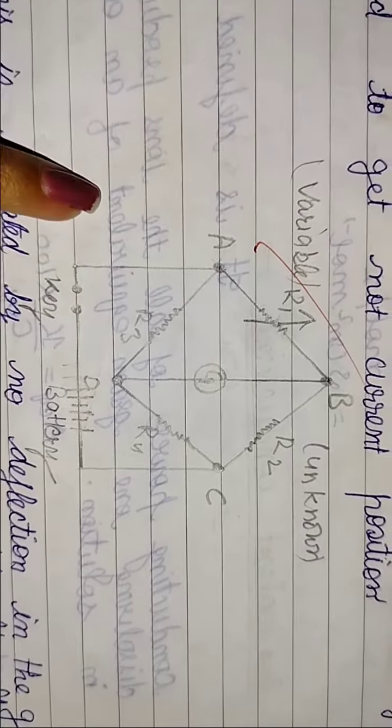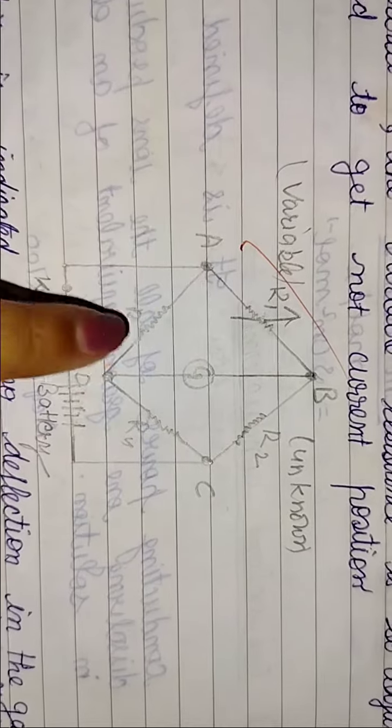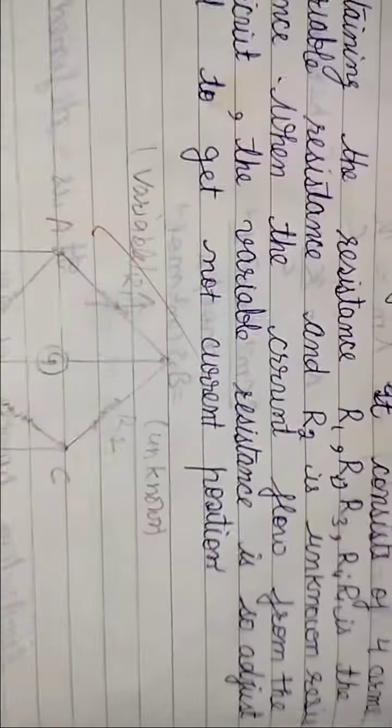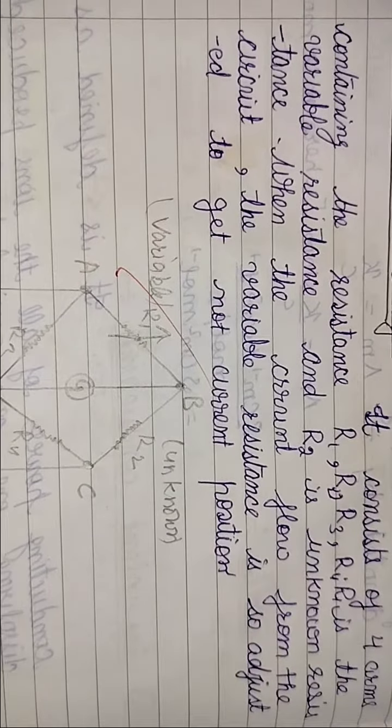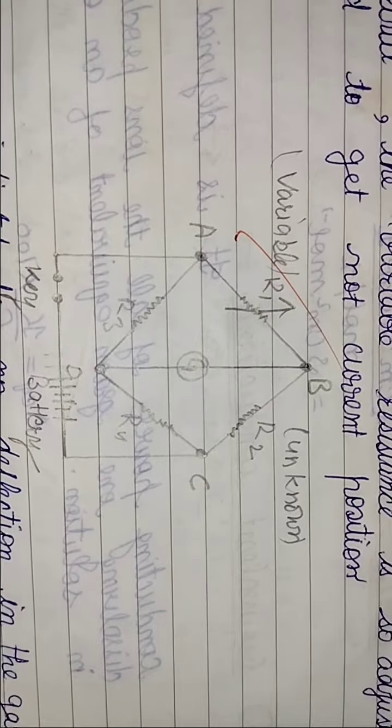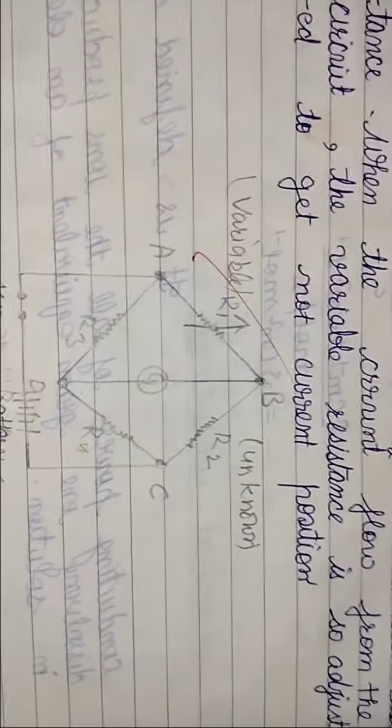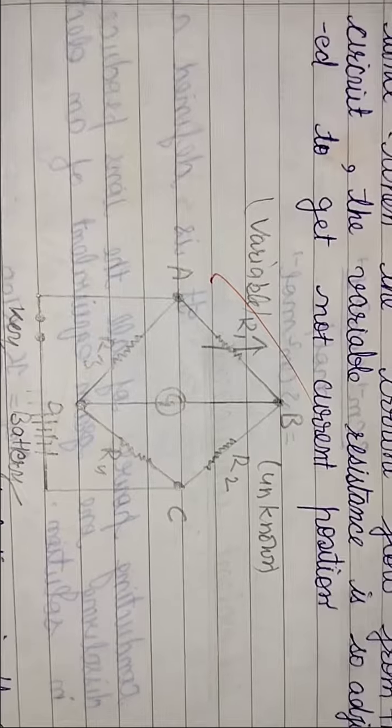This is the diagram of the Wheatstone bridge, which contains four resistances. In this, R1 is a variable resistance, while R2 is an unknown resistance. So we have to find R2. Through this Wheatstone bridge, we can